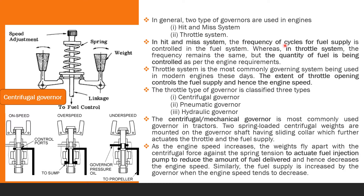In the hit and miss system, the frequency of the cycle of fuel supply is controlled. The governor increases fuel supply as load increases, which increases engine speed as per load, and decreases fuel supply as load decreases, which accordingly reduces engine speed. So in the hit and miss system, the frequency of cycles for fuel supply is controlled, which causes speed to increase or decrease.